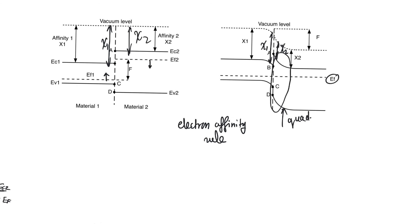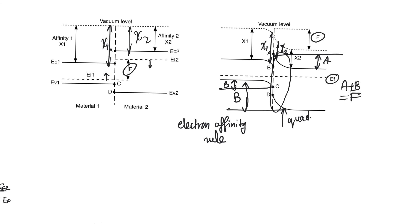What is the distance F? F is the distance between the original Fermi levels, and it represents the total amount of bending that had to happen in the two materials to reach the equilibrium band diagram. If material 1 bent by amount A and material 2 bent by amount B, then A plus B equals F. This F is the built-in potential that developed within the materials as they moved from the flat band state to the equilibrium state.